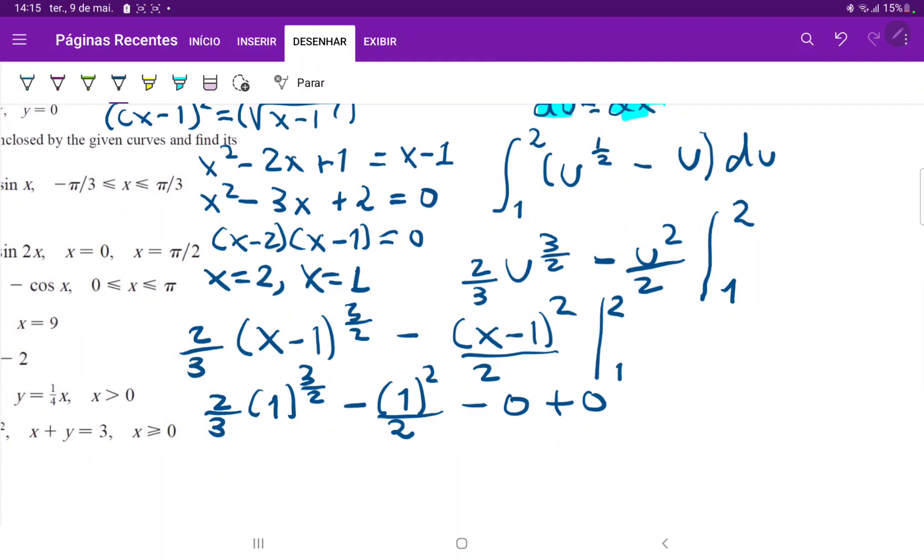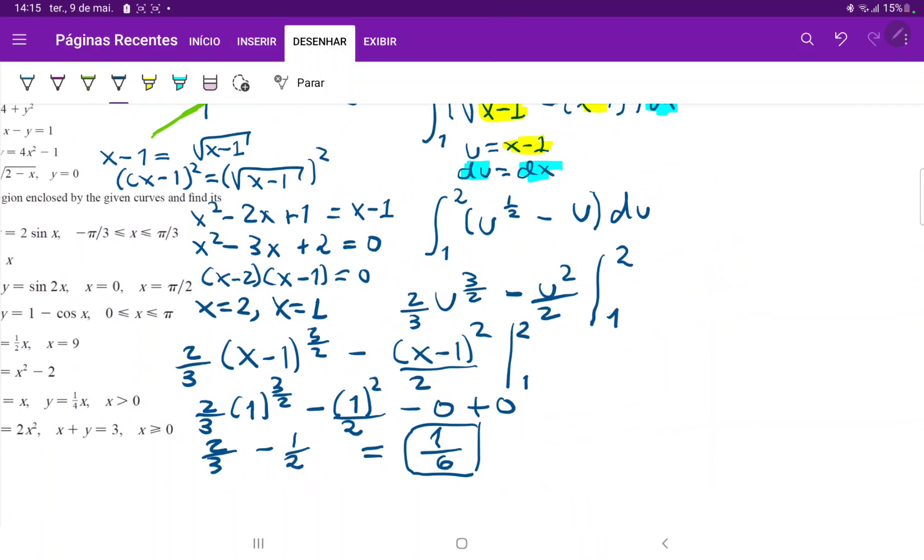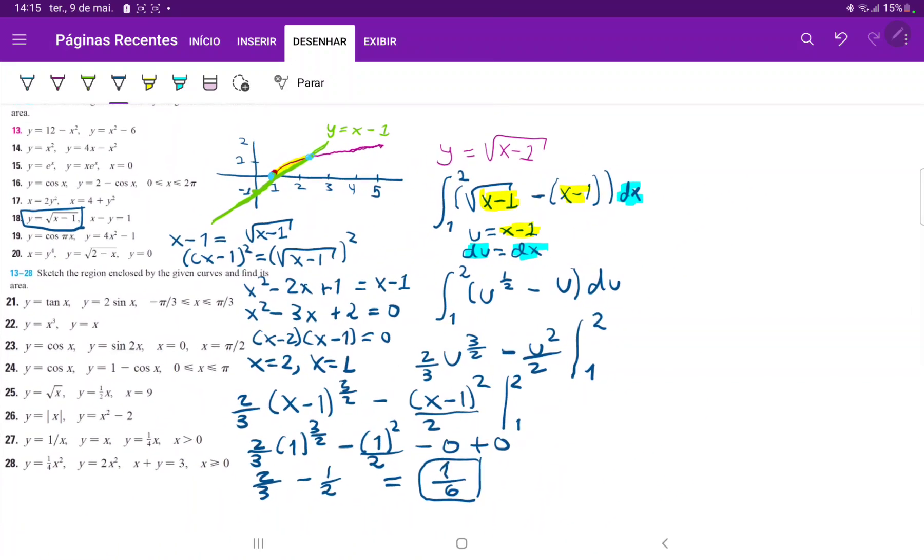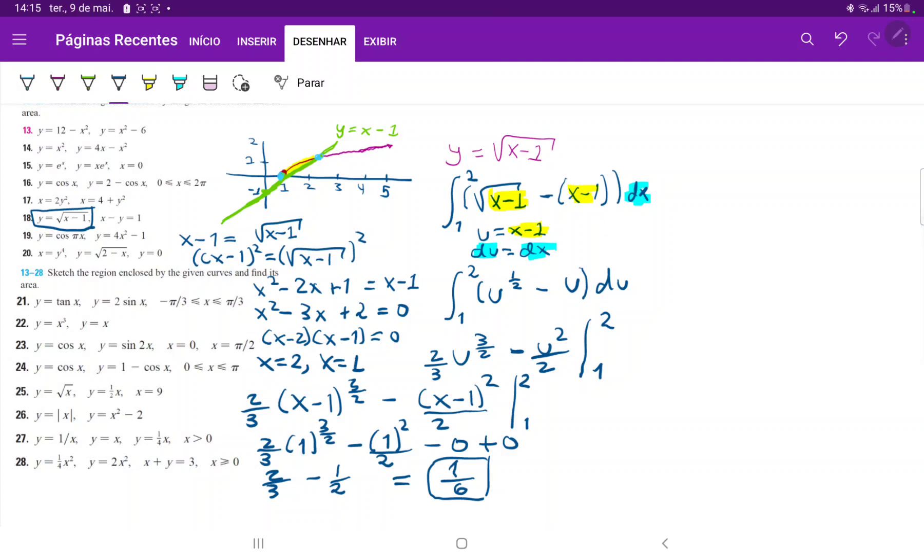And to finish this off, we do have just two thirds minus one half, which is equal to one sixth. So this is our answer. Let me just zoom out so you can see the whole process. So all we did was we drew the curves, we set them equal to each other so that we could find where they intersect. And then we set up our integral of the upper curve minus the lower curve.